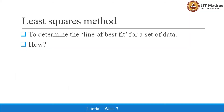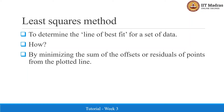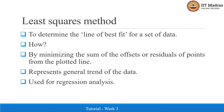Let us have a short recall of the least squares method. We are going to use the least squares method to find the line of best fit for a given set of data points. We find the offsets or residuals of points from the plotted line and minimize this sum of offsets. This line of best fit represents the general trend of the data and is used for regression analysis.